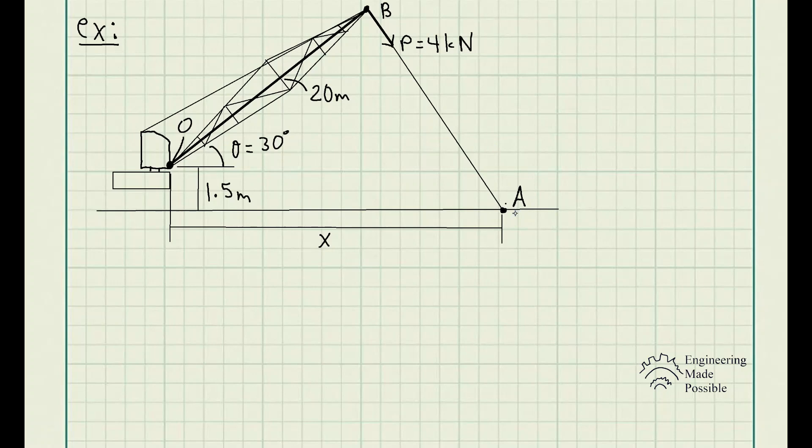The problem statement is: the tow line exerts a force P equal to 4 kN at the end of the 20 meter long crane boom. If theta is equal to 30 degrees,